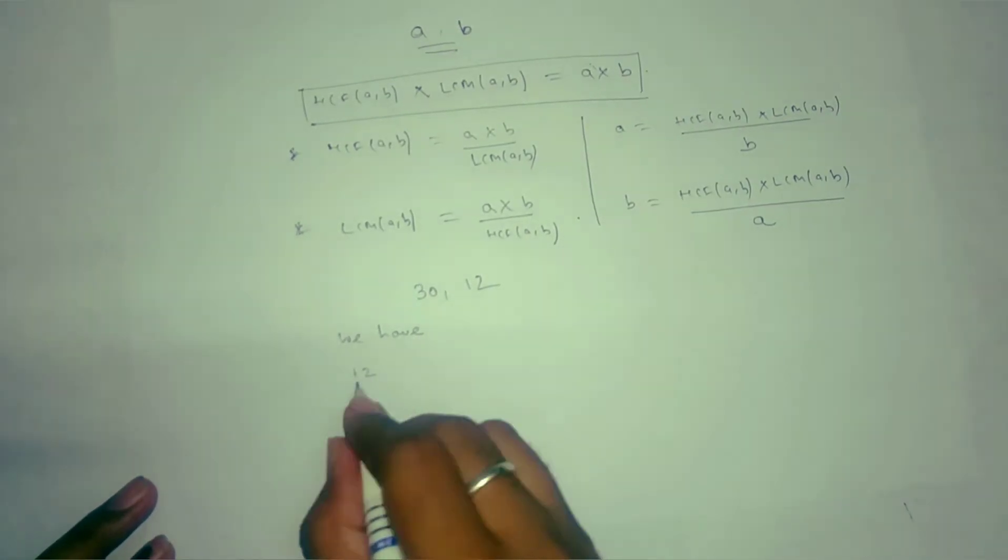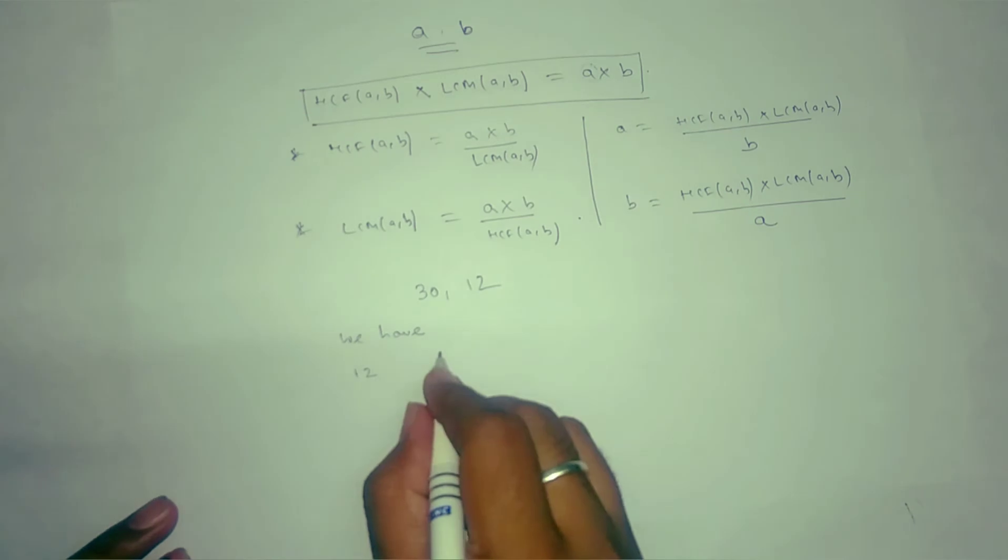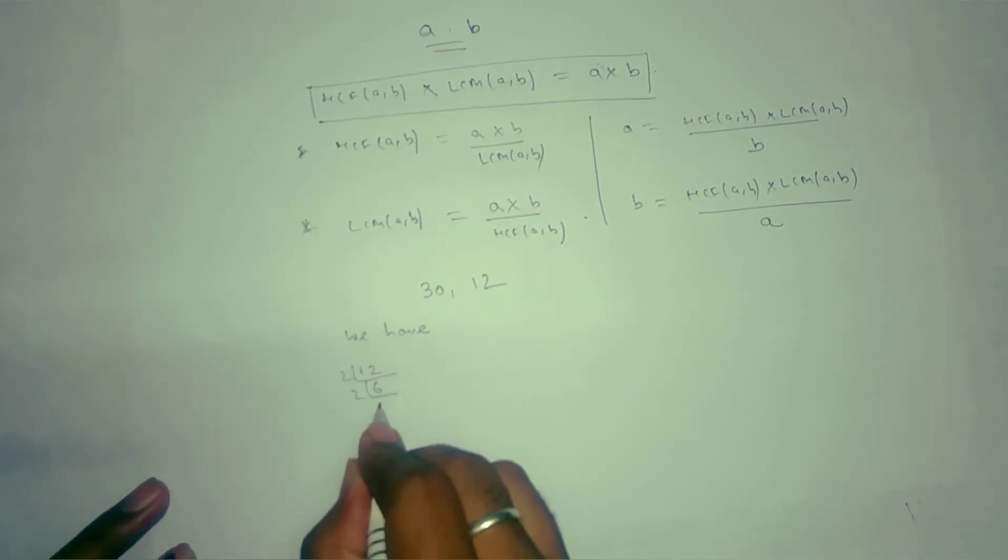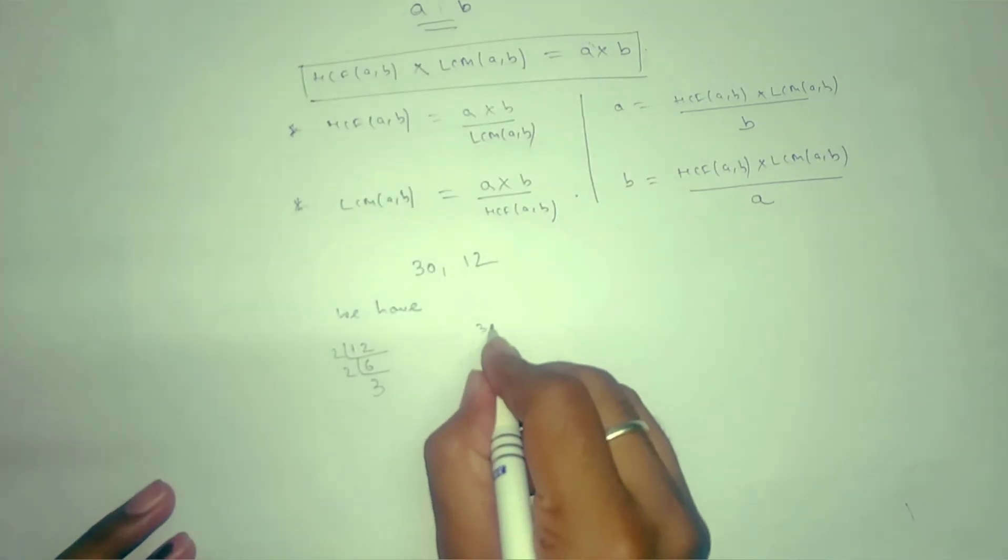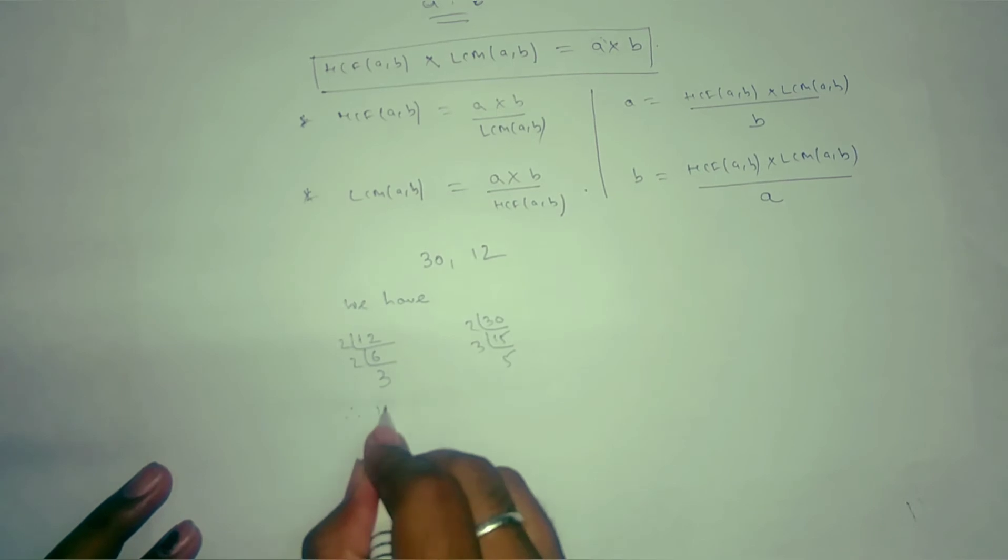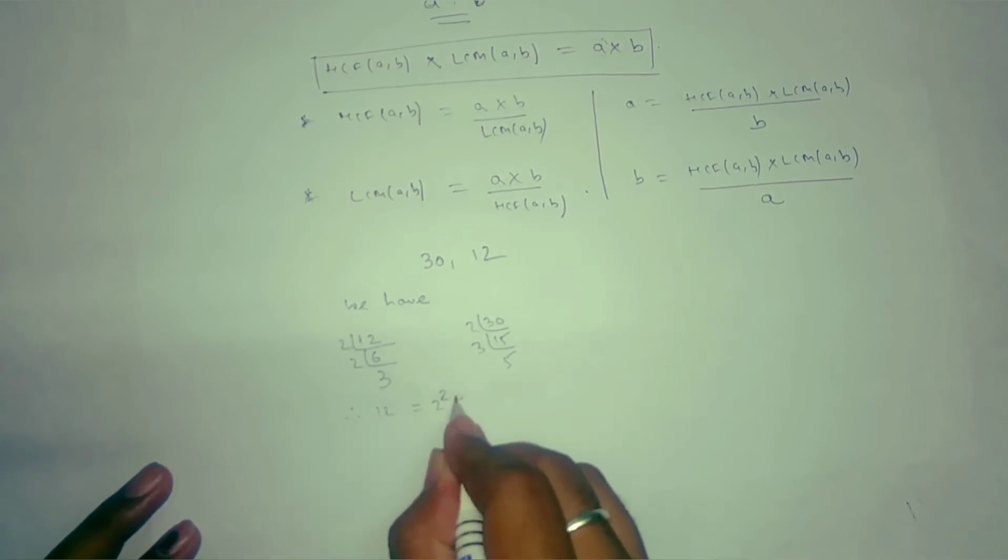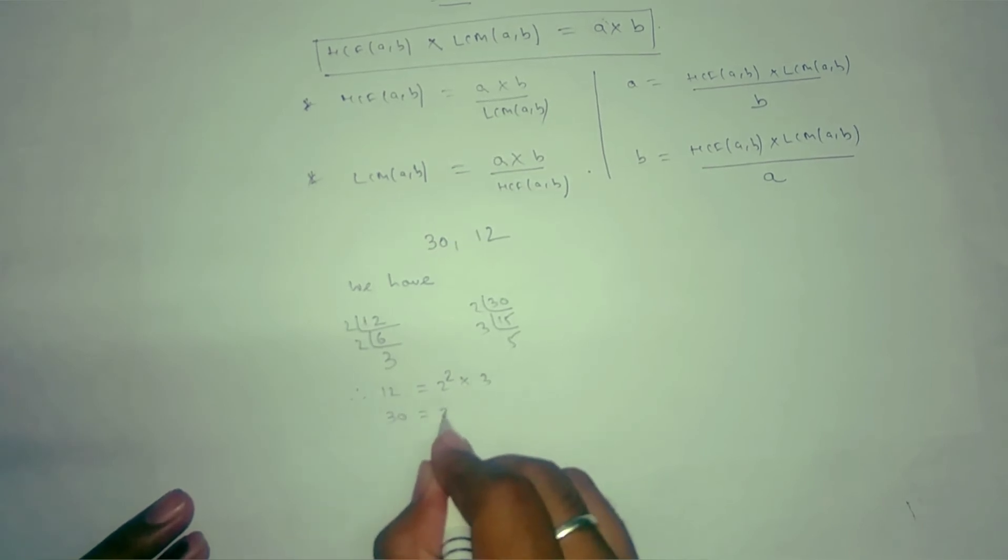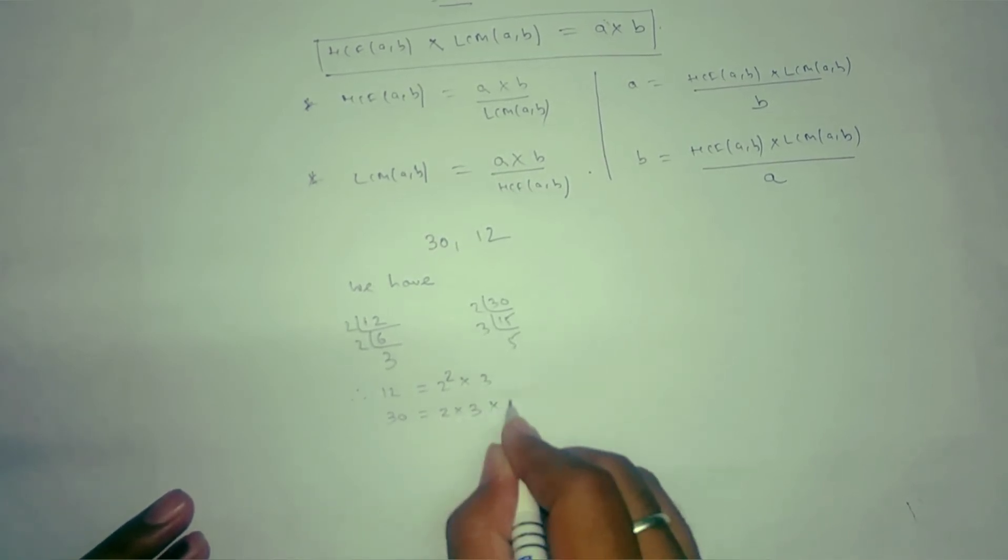If we find the prime factorization form of 12, we already learned this one. 12 can be written as 2 squared times 3, and 30 can be written as 2 times 3 times 5.